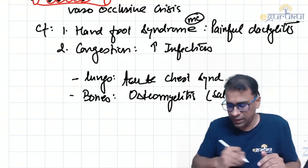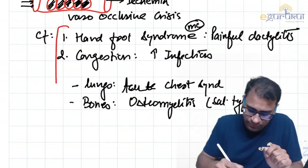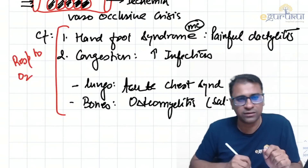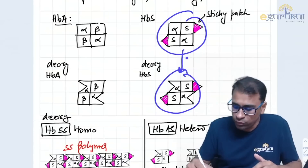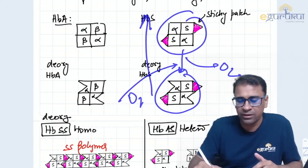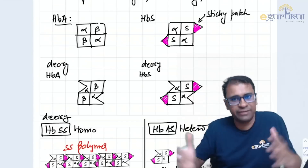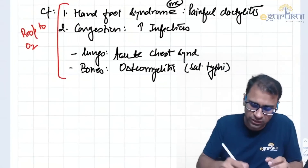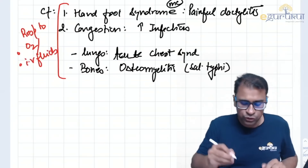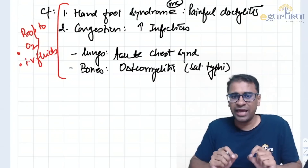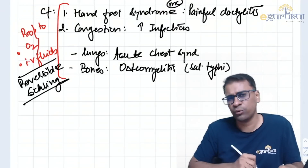Both these symptoms respond to oxygen, because the entire pathology starts when hemoglobin becomes deoxygenated. If you give oxygen, the reverse happens — the complementary area is lost and polymerization stops, relieving symptoms. Therefore, IV fluids and oxygen are the first-line treatment for any case of sickle cell anemia. This is called reversible sickling — initially only reversible because necrosis has not yet occurred, just mild ischemia.